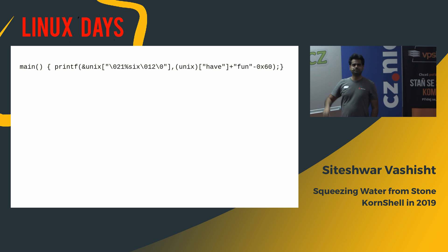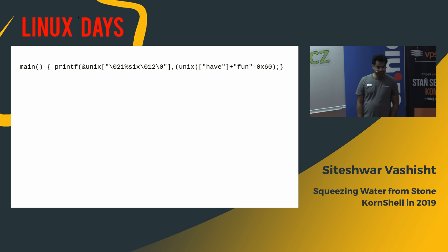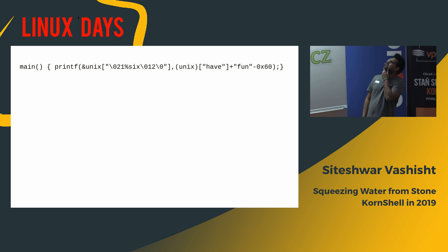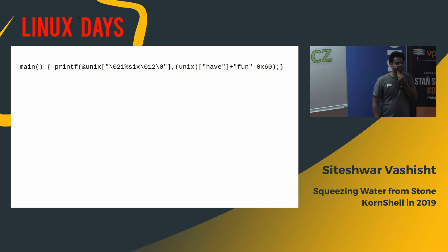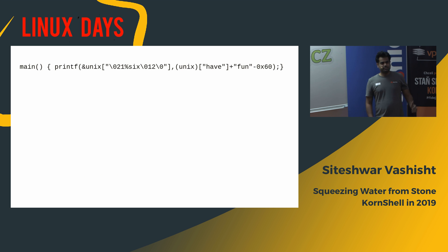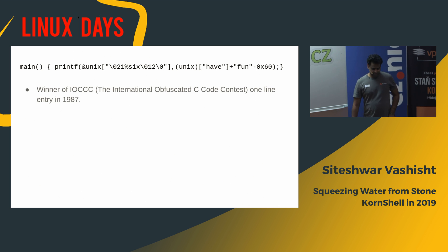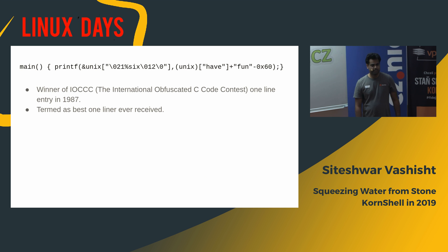What does this code do? It's tricky — it will print something. The answer is UNIX, it will print UNIX. And if you don't understand this code, it's fine. It's tricky, it's made tricky on purpose. It was the winner of the IOCCC competition in 1987, and when it won the competition, it was termed as the best one-liner ever received.